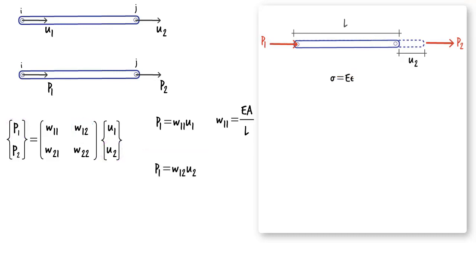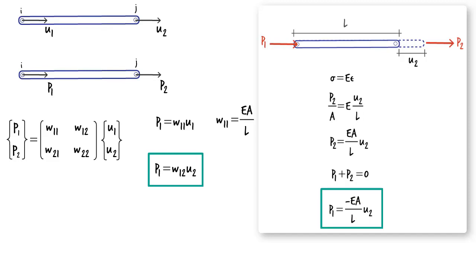Using the axial stress-strain relationship, we can write. Since the force equilibrium must be maintained in the member, P1 equals negative P2. Comparing these two expressions, we can see that W12 equals negative EA over L.